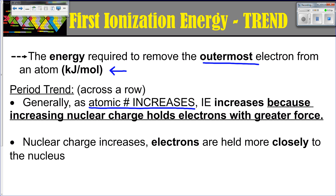Your ionization energy is also going to increase because that nuclear charge is holding those electrons closer. If ionization energy is how much energy is required to take something away, and you've got so many protons in that nucleus holding those electrons closer, it's going to take a huge amount of energy to pull an electron away. So as your nuclear charge increases, the electrons are held more closely and the ionization energy goes up.